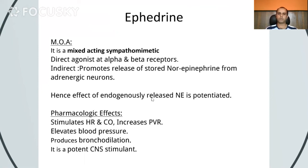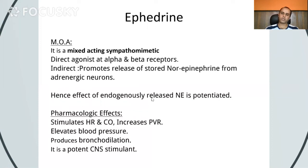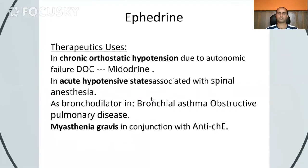The pharmacologic effects of Ephedrine include stimulation of heart rate and cardiac output, increased peripheral vascular resistance, elevation of blood pressure, and bronchodilation. It is also a CNS stimulant. Its therapeutic uses include chronic orthostatic hypotension due to autonomic failure, hypotensive states associated with spinal anesthesia, as a bronchodilator in bronchial asthma or obstructive pulmonary disease, and in myasthenia gravis in conjunction with anticholinesterase agents.